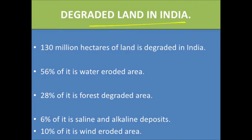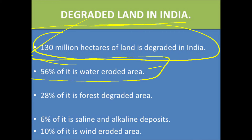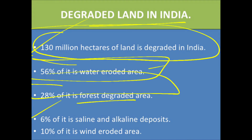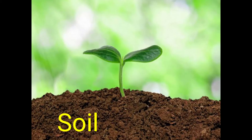Degraded land in India: about 30 million hectares of land is degraded. Of this, 56% is water-eroded area, 28% is forest-degraded area, 6% has saline and alkaline deposits, and 10% is wind-eroded area. This is how land gets degraded in India.